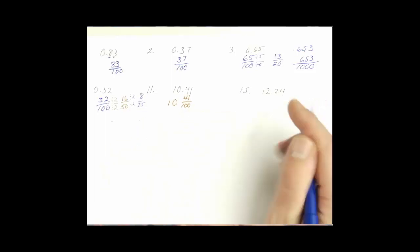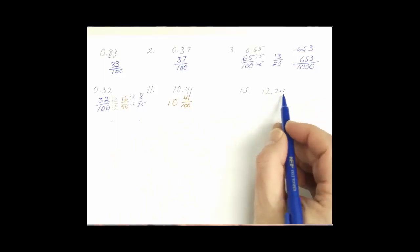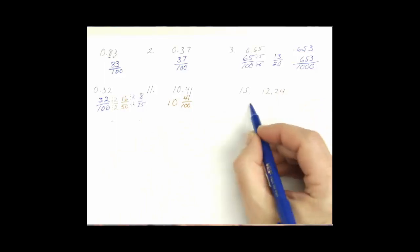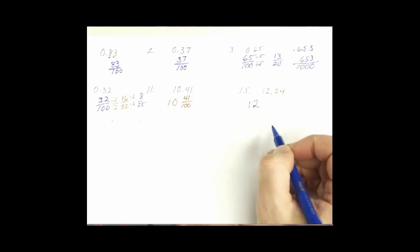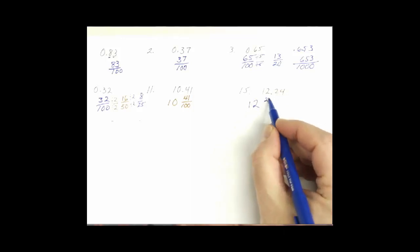Problem number 15. We have 12 and 24 hundredths. So again, the whole number is going to stay the whole number. The 24 hundredths. As we write it as a fraction, we say it, we write it. And then check to see if we can reduce.